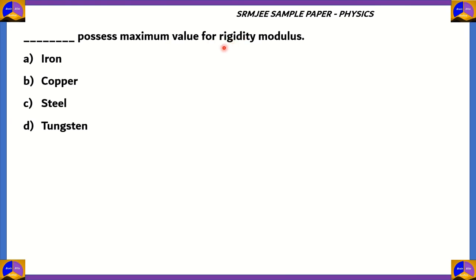Here comes our first question. It is from physics. Which element possesses the maximum value for the rigidity modulus? We have iron, copper, steel, and tungsten. Iron has a value of the rigidity modulus equal to 41. Copper has a value equal to 45. The rigidity modulus for steel is equal to 77. But for tungsten, it's a whopping 160. So therefore, option D tungsten happens to be the correct option, becoming the element that possesses the maximum value for rigidity modulus.